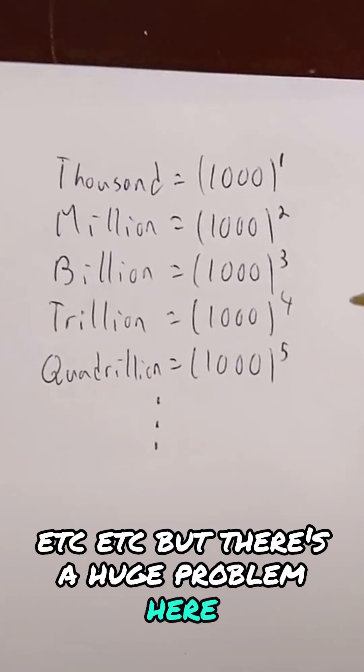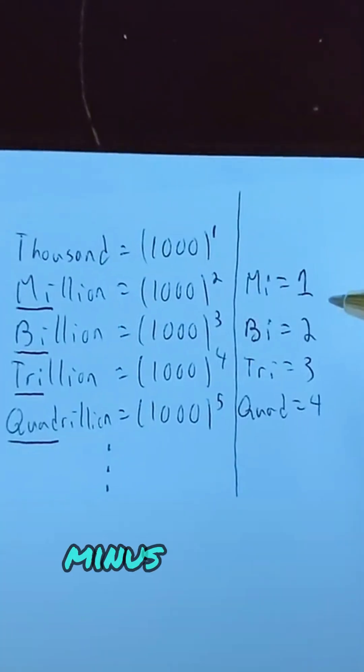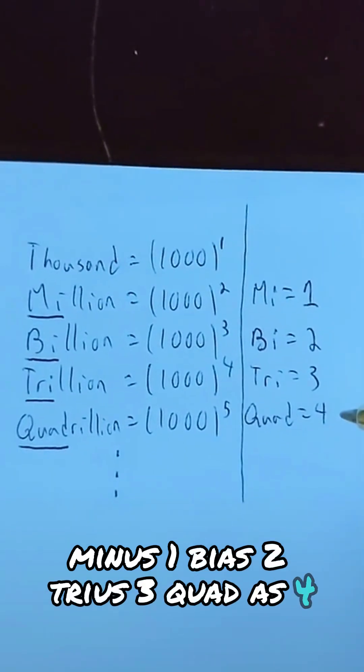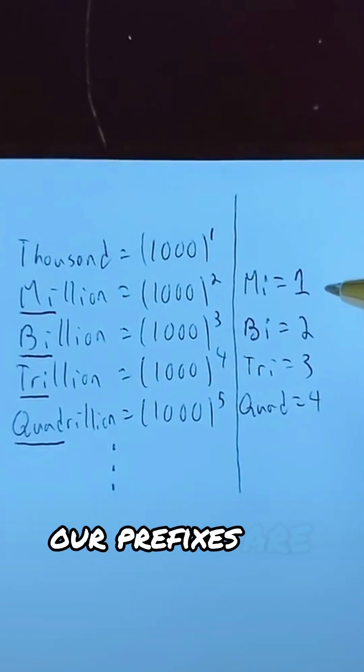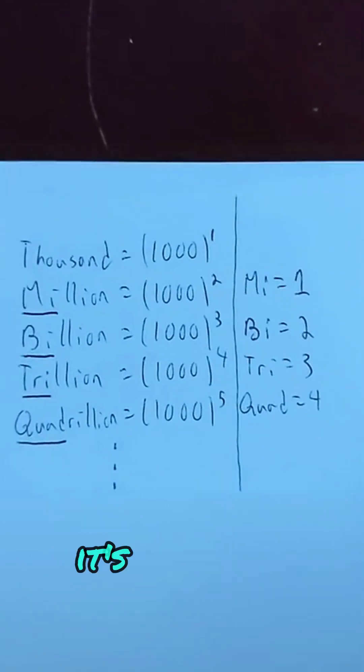But there's a huge problem here. If we just look at the prefixes, my is one, by is two, try is three, quad is four. And if you notice, our prefixes are off from our exponents. It's absolute madness.